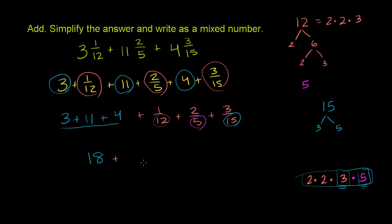All three fractions are going to be over 60. To go from 12 to 60, we multiply the denominator by 5, so we also multiply the numerator by 5. 1 times 5 is 5, so 5/60 is the same as 1/12. To go from 5 to 60, we multiply by 12. 12 times 2 is 24.